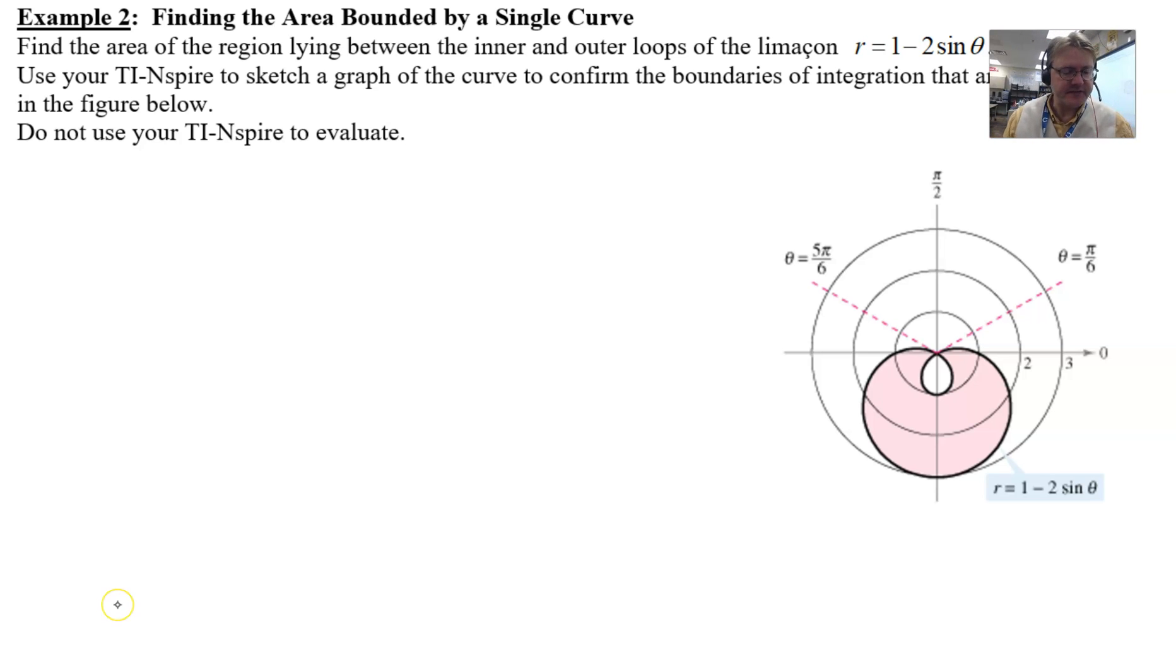The question reads: find the area of the region lying between the inner and outer loops of the limaçon r = 1 - 2sin(θ). Use your TI-Nspire to sketch a graph of the curve to confirm the boundaries of integration that are shown in the figure below. And I asked in this particular case to not use your TI-Nspire to evaluate.